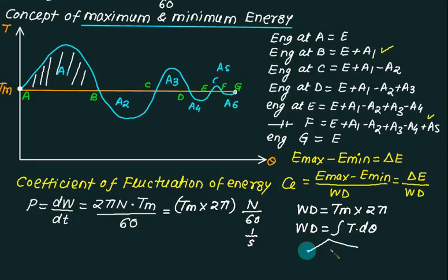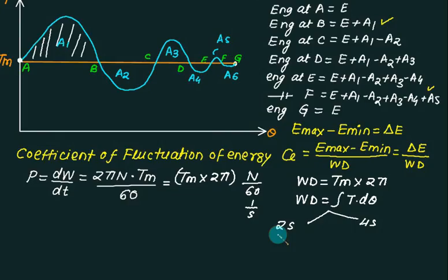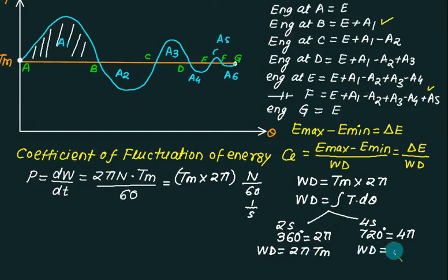And in case of 2 stroke, and in case of 4 stroke, in 2 stroke, cycle is completed in 360 degrees. That is 2 pi radian. In 4 stroke, it is completed in 720 degree. That equal to 4 pi. And therefore, work done for 2 stroke is 2 pi multiplied by Tm, mean torque. And this one is work done equals to not 2 pi but 4 pi multiplied by Tm. This is the major difference.